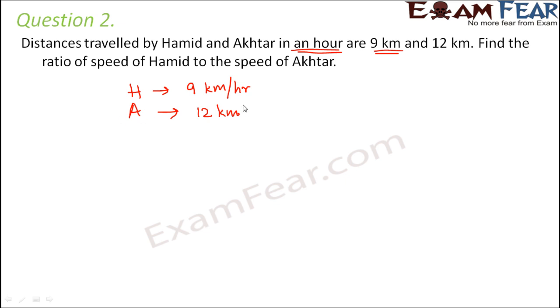Find the ratio of speed of Hamid to the speed of Akhtar. So this is the distance travelled is 9 km and in how much time in an hour. So that means speed of Hamid is 9 km per hour. Similarly, speed of Akhtar is 12 km per hour. That's because we know that speed is equal to total distance travelled divided by total time taken. So they have covered 9 km in 1 hour and again 12 km in 1 hour respectively. So these would be their speeds.